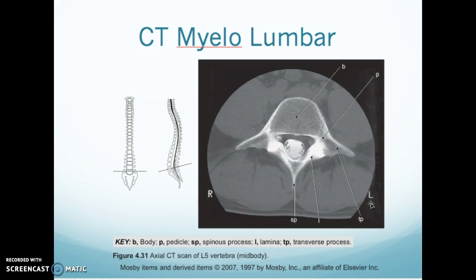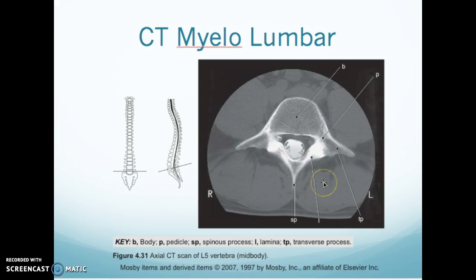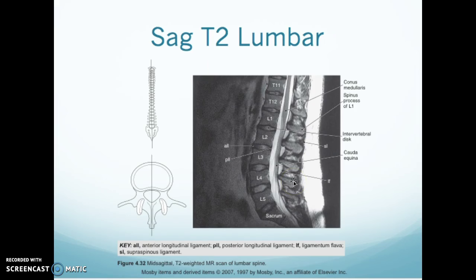This is a CT myelogram — we know that because it looks like an x-ray but has contrast in the CSF, and you know you're down in the lumbar spine as the nerves are just free-floating, not in the cord. This is your cauda equina down low. Here's your body, your pedicle, your transverse process, your lamina, and your spinous process.